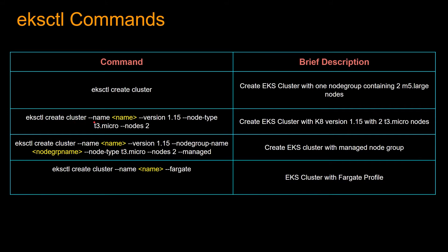The command I generally use is: 'eksctl create cluster --name' to give it a name, '--version' to specify the Kubernetes version, '--node-type t3.micro' because t3.micro is under the free tier, and '--nodes 2' to spin up two worker nodes. You can set nodes to 1 or 3 as needed. This creates a cluster running Kubernetes 1.15 with two t3.micro nodes.